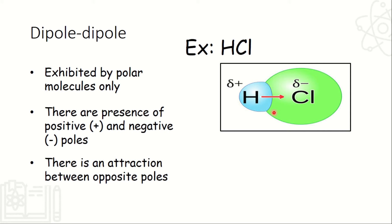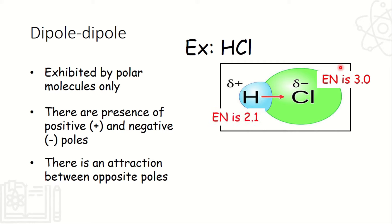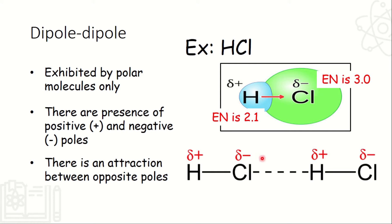So ganito yung itsura ng molecule natin ng hydrogen chloride. Meron tayong positive pole — yun yung hydrogen natin kasi mababa ang electronegativity — at meron tayong negative pole, yun naman yung ating chloride, dahil sa electronegativity niya. So yung electronegativity ng hydrogen ay 2.1, ang chlorine naman ay 3.0. So pag kinuha yung difference niya, 0.9 — therefore, polar bond yan. Yan ay polar molecule kasi meron kang positive saka negative poles. Kapag present yung dalawang molecule ng HCL, magkakaroon ng bonding between the negative and the positive pole — there will be bonding between two molecules by means of dipole-dipole attraction.